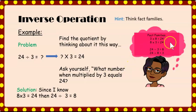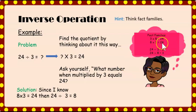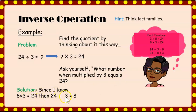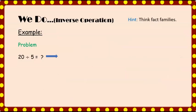Knowing your fact families can help you answer that question. Here are our fact families: three times eight equals 24. Therefore, since we know that eight times three is 24, then 24 divided by three equals eight.